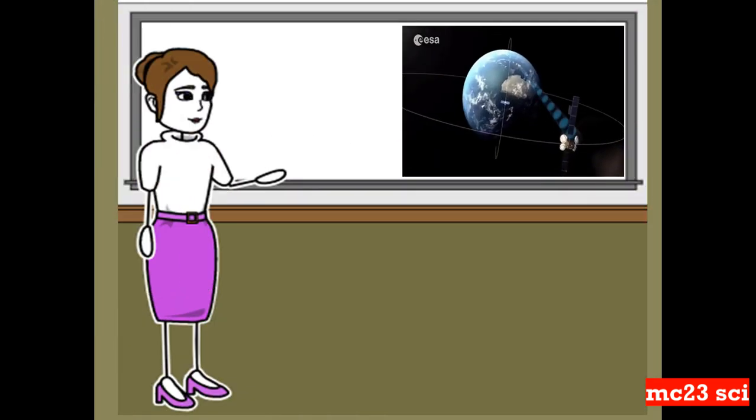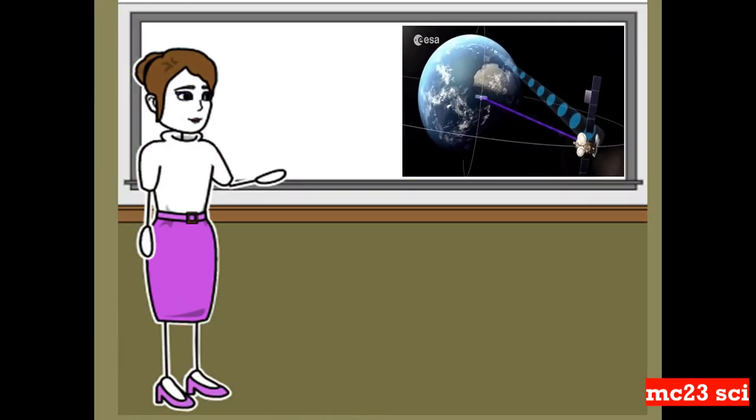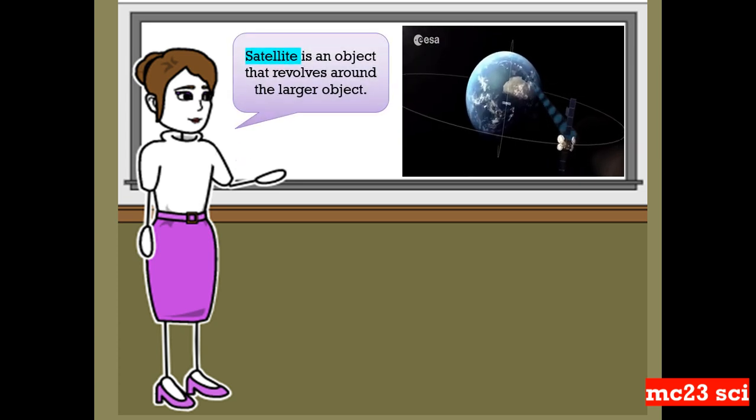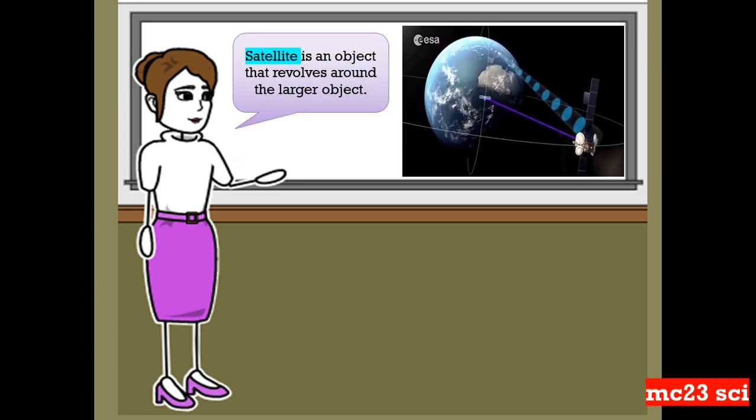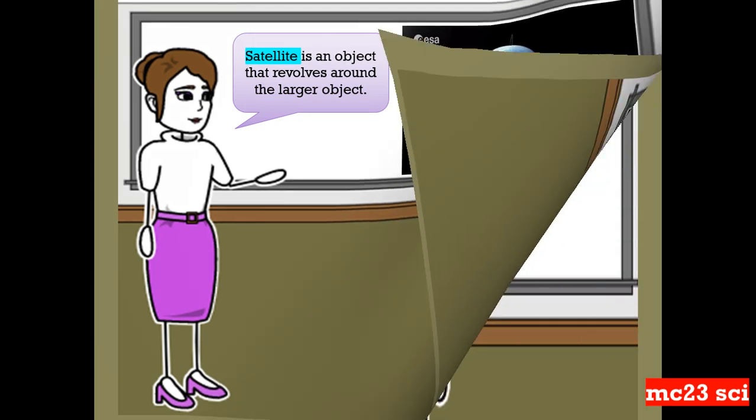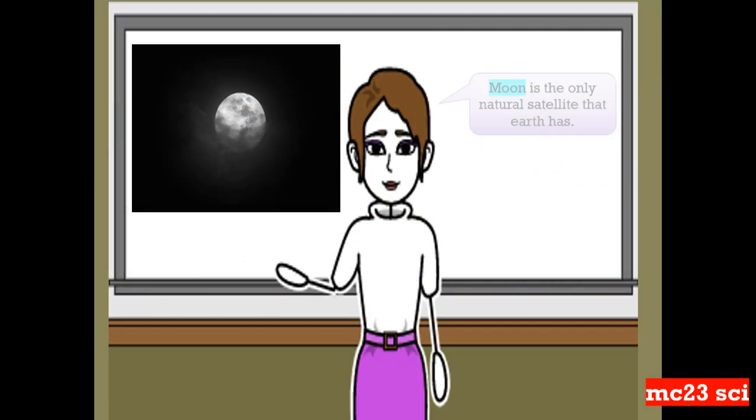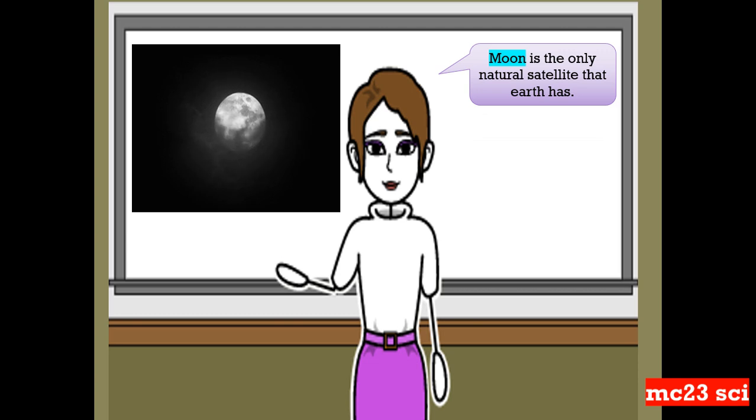Take a look at the picture. This is what we call a satellite. A satellite is an object that revolves around a larger object. And the moon is the only natural satellite that the Earth has.